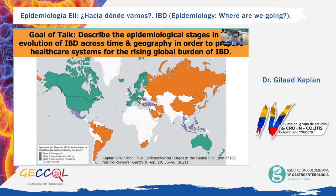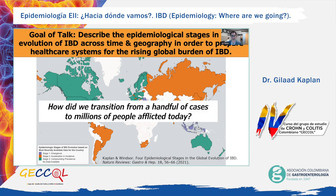The goal of my work is to establish the current epidemiological framework of IBD in the Western world, contrast that with the rise of IBD in newly industrialized countries in Asia and Latin America, and forecast the global impact of IBD in 2030 and beyond. The purpose is to prepare healthcare systems across the world to meet the challenges that patients with IBD will face from the rising prevalence of Crohn's disease and ulcerative colitis. The focus of my research is to answer this question: how do we transition from a handful of cases to millions of people afflicted today?